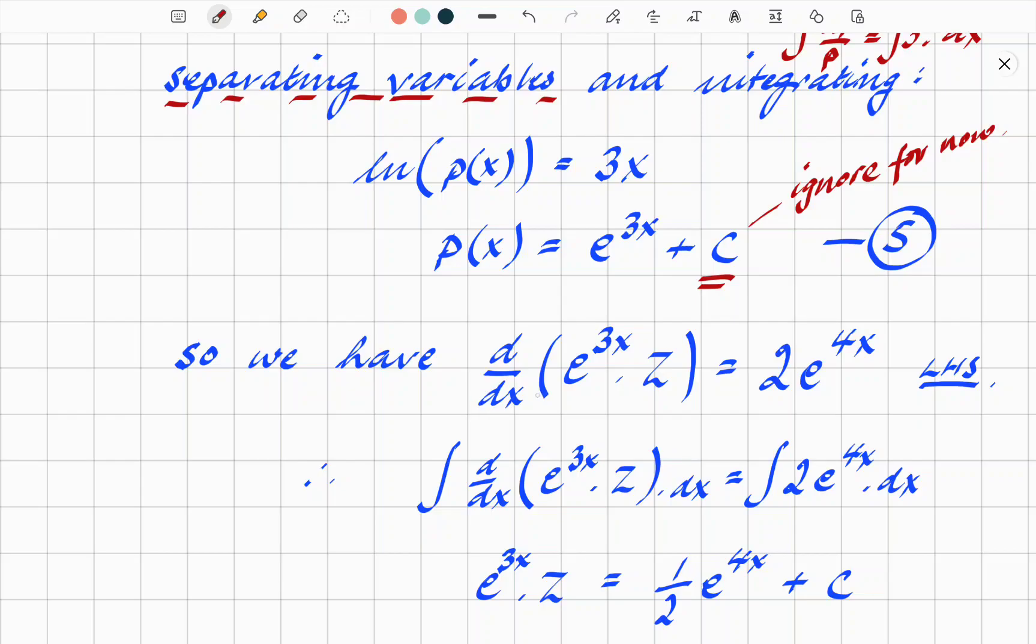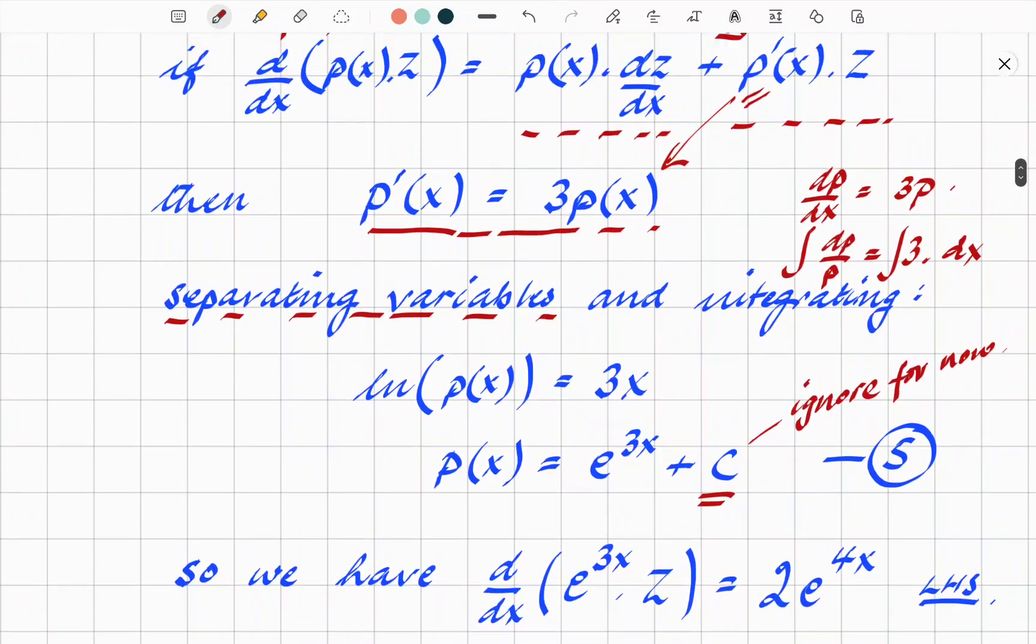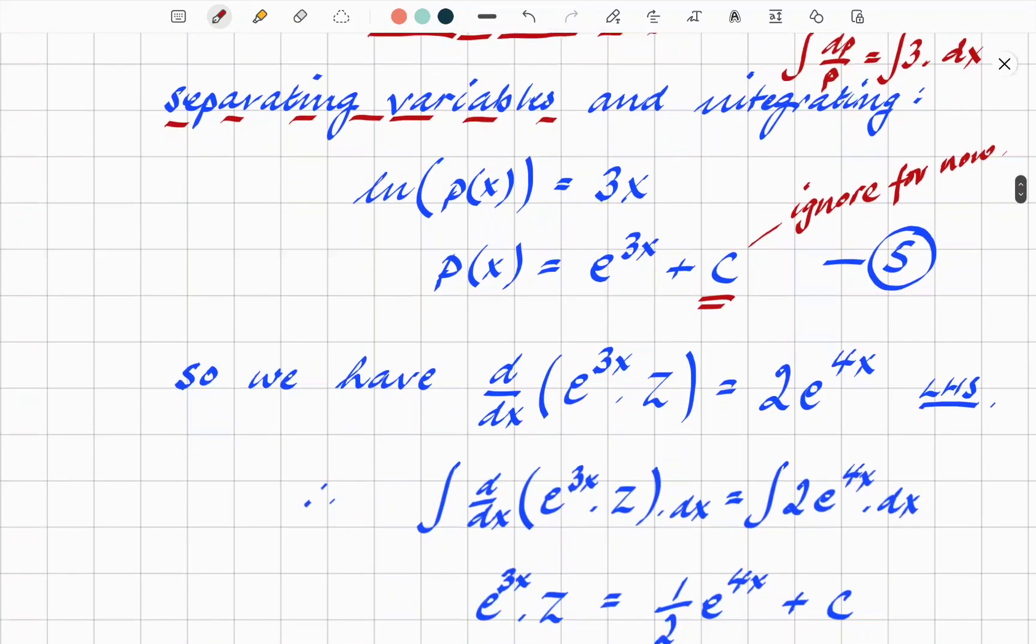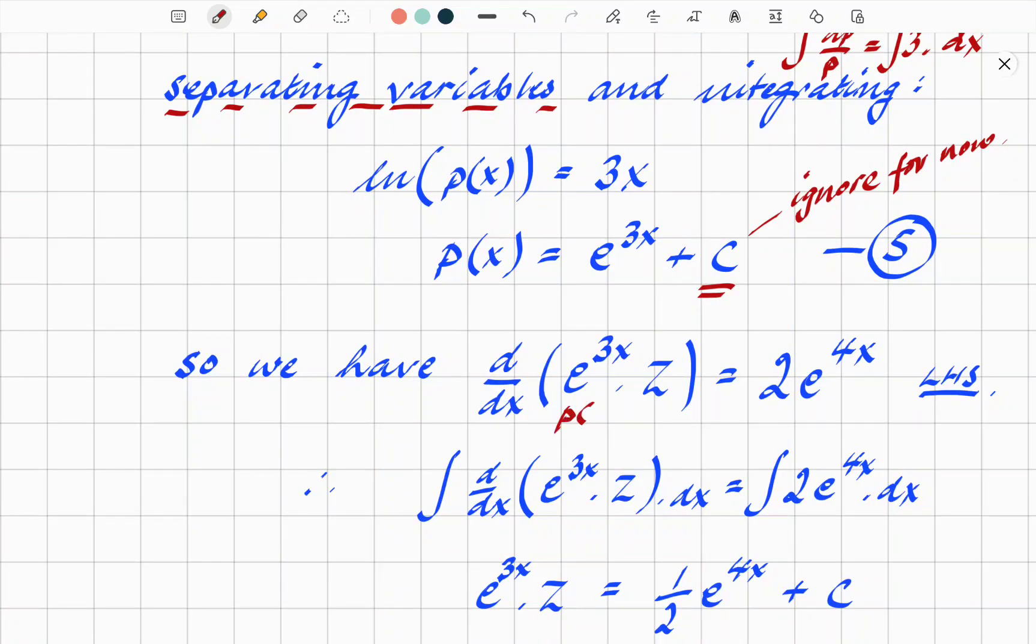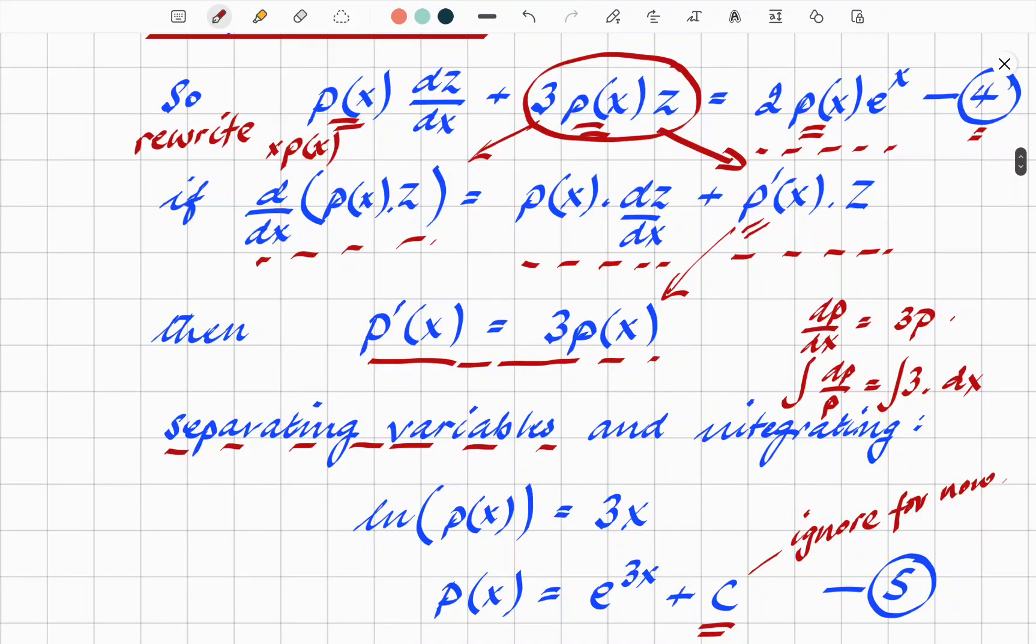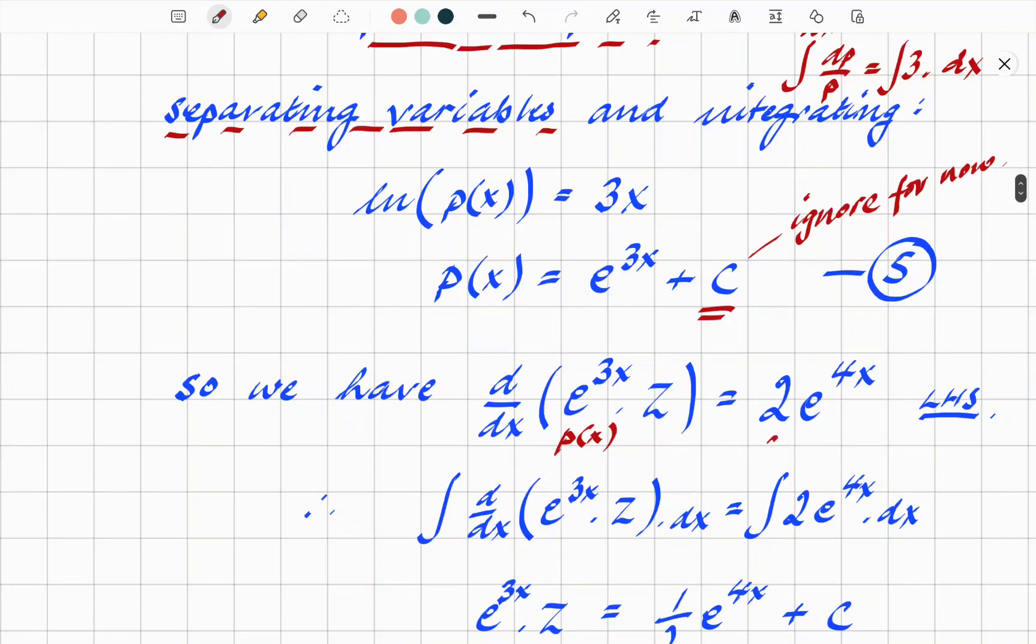What do we have next? We're saying, therefore, that remember the statement d/dx of p(x)z. p(x), remember, is e^(3x), we've just found that. Put that back in there. And on this side, we had 2p(x) times e^x, so that's 2p(x) times e^x. Remember p(x) = e^(3x), therefore e^(3x) times e^x, you're going to get e^(4x). Integrate both sides now.